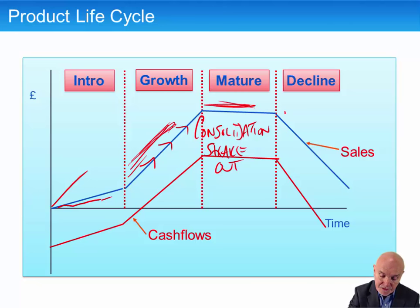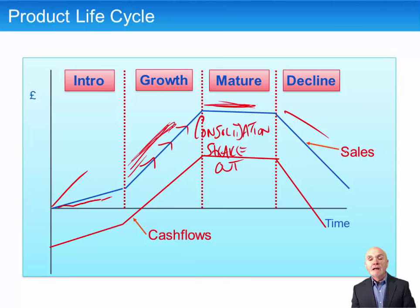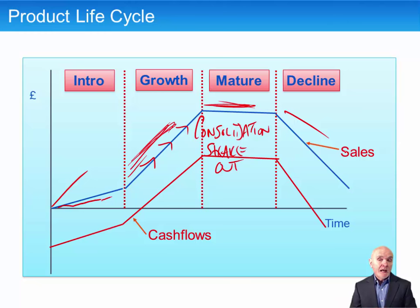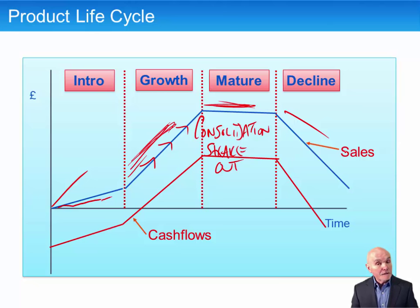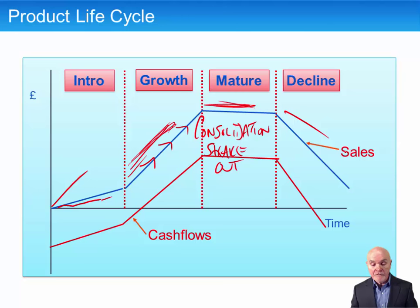In the decline phase, your major decision is: am I going to get out of the market quickly, or am I going to hang in there in the hope that it's still going to be profitable? Don't think decline means three or six months — decline can sometimes be five to ten years, and there can be good profits available because really no one in their right mind is going to get into that market. You might possibly be the last organisation left standing. How you might improve your performance here is to try to find which parts of the market are still thriving, maybe buy out some of your competitors so you have the market to yourself — but either get out or try to get a dominant position in the final phase of the market.